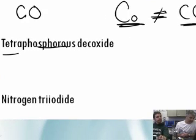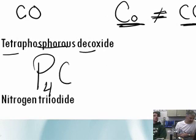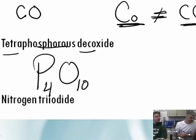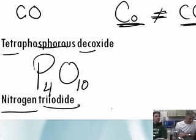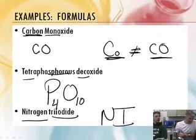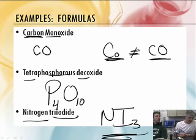Tetraphosphorus - tetra means four, phosphorus is P, so P₄. Decoxide - O₁₀. Didn't we just do that on the last page? Yeah, well, we did it in the other direction, so I guess it's a new problem. Nitrogen triiodide - nitrogen is N, so NI₃. Tri means three. Very simple.